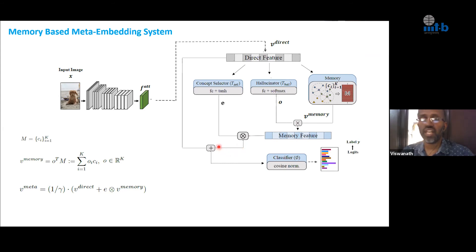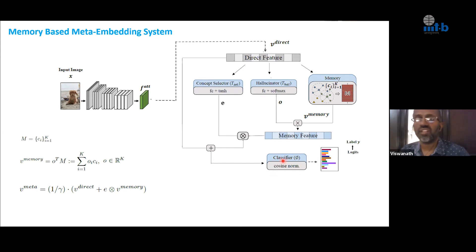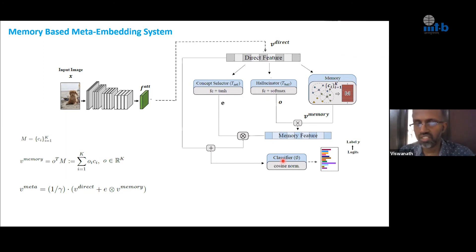This meta feature is expected to improve few-shot performance because it will learn to pick the right dimensions using the concept selector and the right centroids using the hallucinator output. Using the right centroids and the right dimensions, we can find the right additive component to enhance the direct feature — just like the spider leg representation enhancing the fly representation, helping the classifier learn better. That was the motivation of the authors, and it looked pretty interesting.